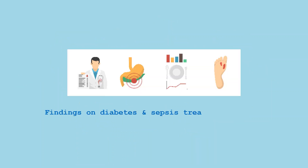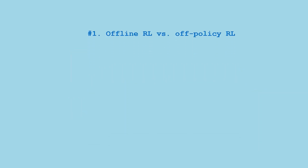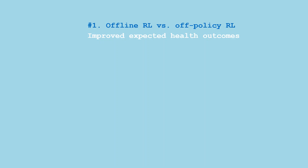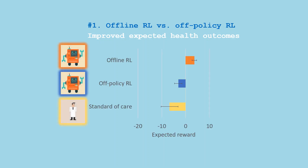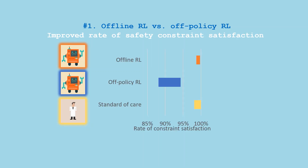We tested our solution on both diabetes and sepsis treatment settings. We found that offline RL is expected to give positive health outcomes, like meeting glycemic targets, whereas negative health outcomes like complications or death are expected under off-policy RL and the standard of care across different safety constraints. Offline RL also meets constraints more often than off-policy RL.